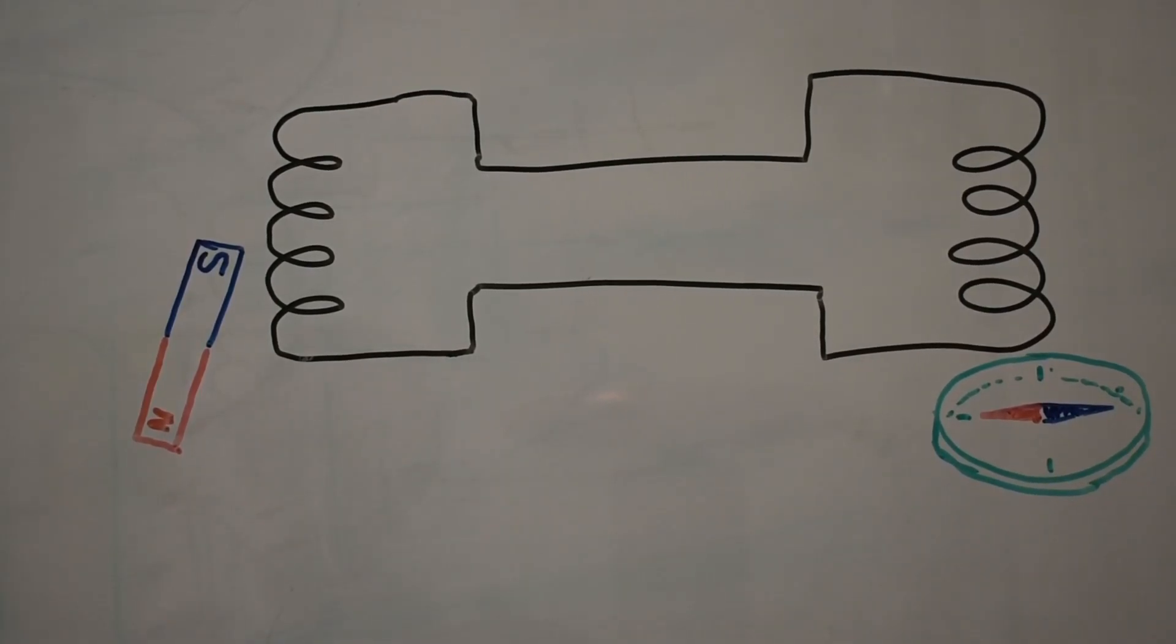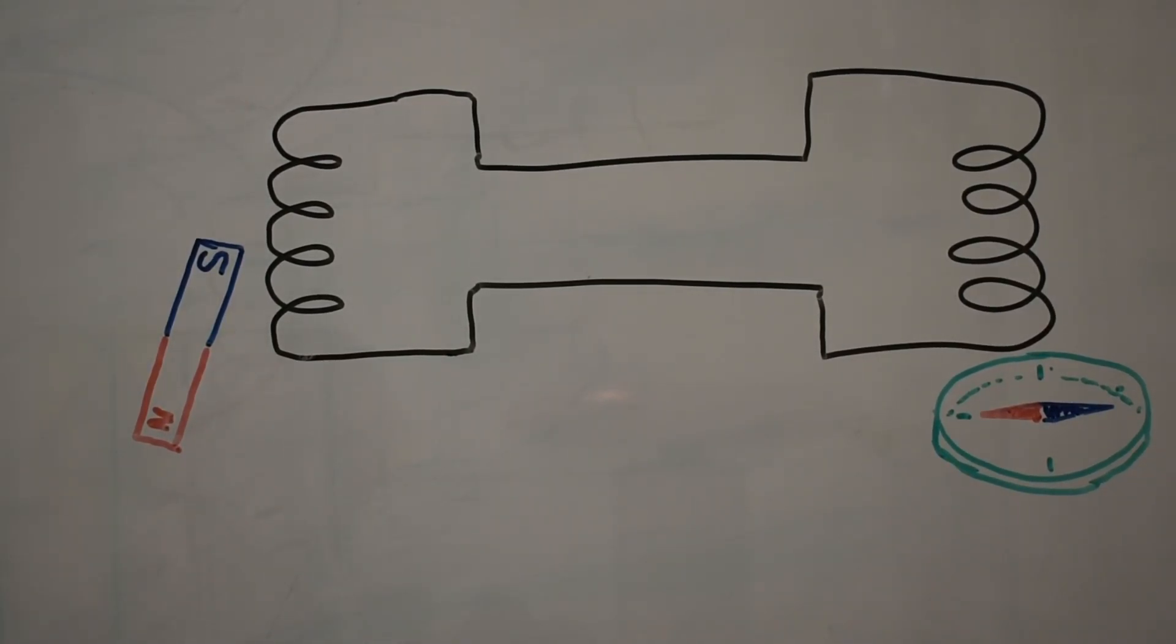This is the circuit diagram showing you the coils, two coils back to back connected, and the magnet and the compass.